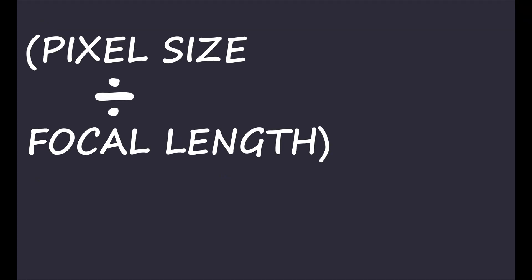If you make good choices ahead of time you can save a lot of money. I found this equation to figure out your image scale — this is something new to me. I've been doing this for two years and I wish I would have learned this equation when I started, because it helps you pick the right camera for your equipment. The image scale is your pixel size divided by your focal length, times the number 206.